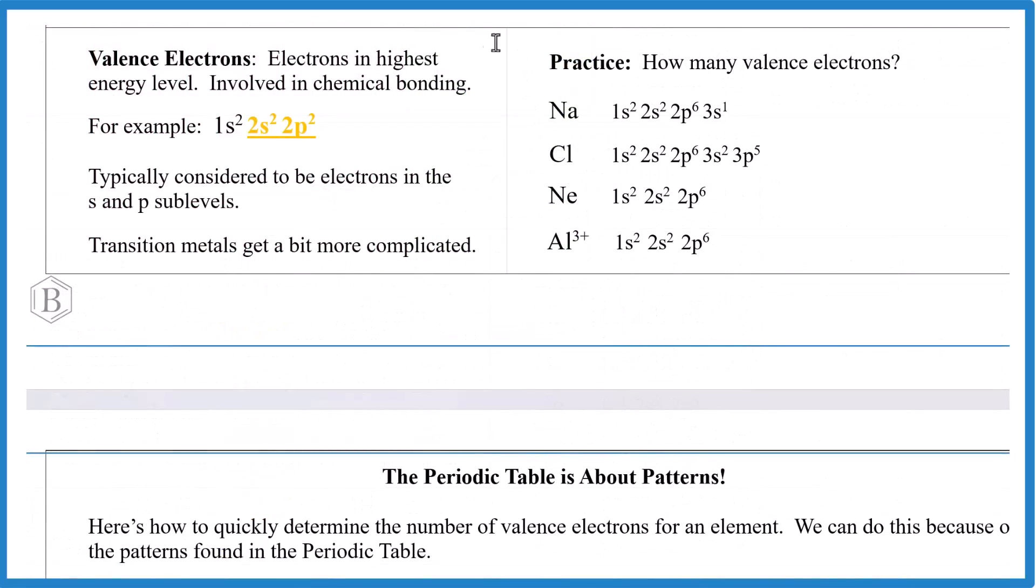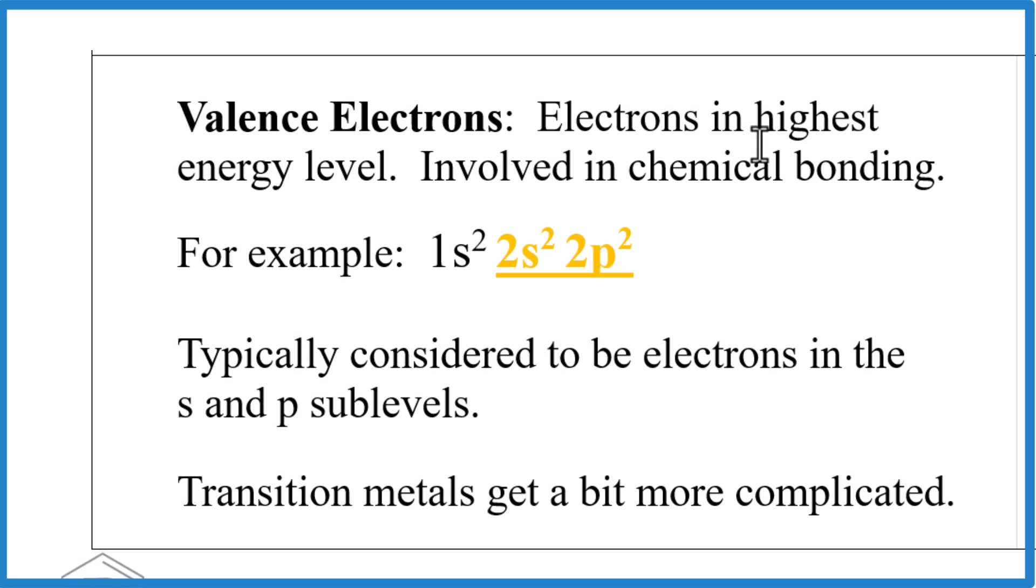Often in chemistry we talk about valence electrons. They're in the highest energy level. And they're the ones that form chemical bonds. So they're real important. For example, here we have 1s2. That energy level is full. But then we have 2s2 and 2p2. This is the highest energy level. 2 plus 2, there are 4 valence electrons. Typically we only consider S and P to be the valence electrons. Transition metals with those d orbitals, they get a little tricky. So pause, figure out how many valence electrons each of these here has.